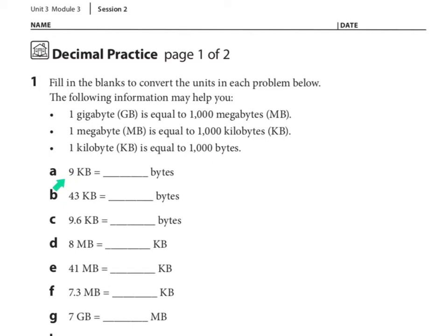A says 9 kilobytes equals how many bytes? Well, it says right here, 1 kilobyte is equal to 1,000 bytes, therefore 9 kilobytes is equal to how many bytes? The answer is 9,000, because it would be 9 times 1,000.